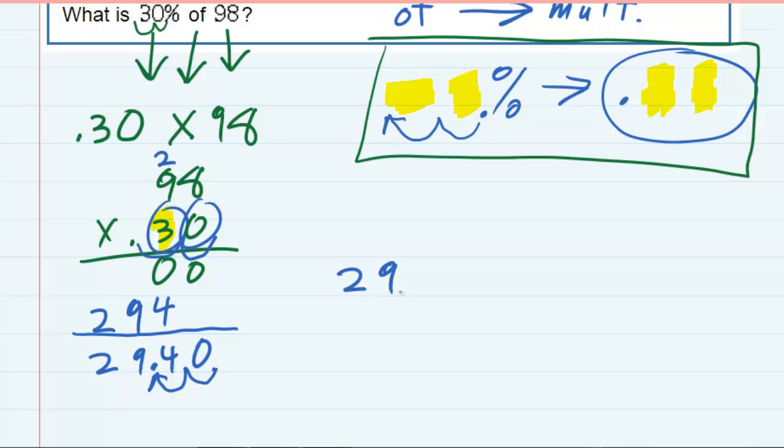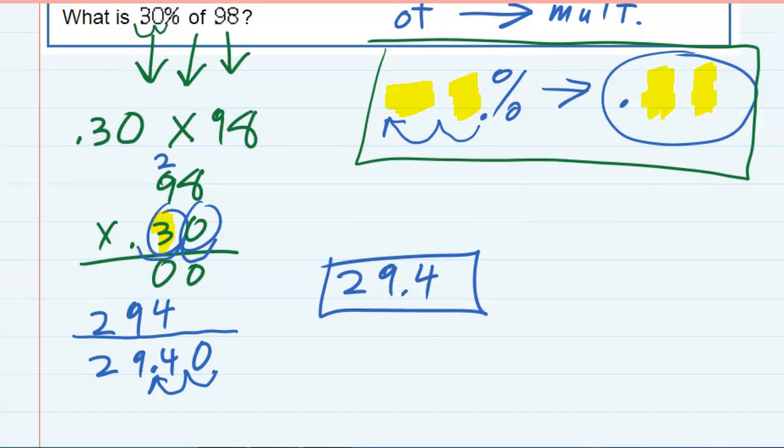So 29.4, or .40 if you prefer, is our answer. What is 30% of 98? 29.4.